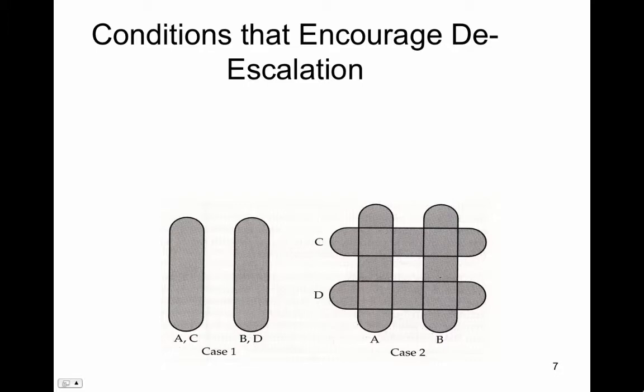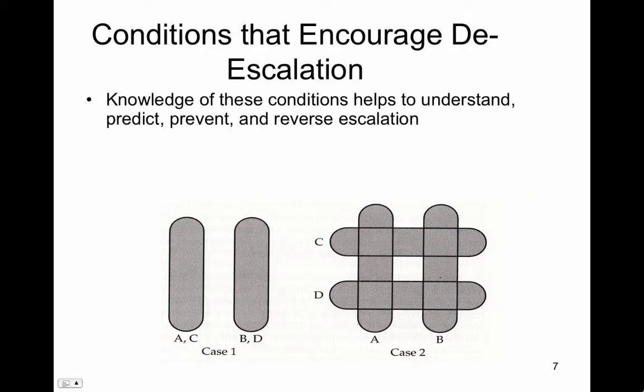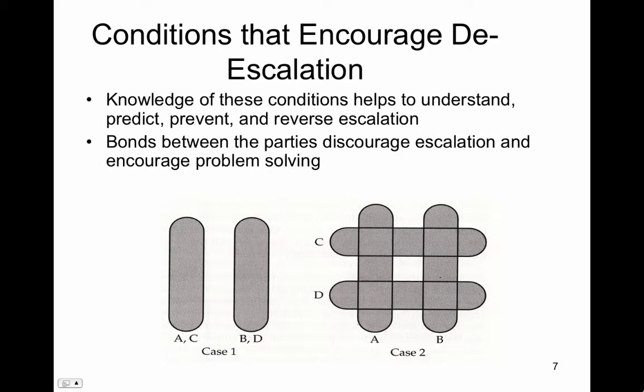What are the conditions that encourage de-escalation of conflict? Bonds. Bonds between parties discourage escalation and encourage problem solving. We have overlapping versus cross-cutting bonds. In order to resolve intractable conflicts, we need to promote cross-cutting bonds such as good neighborly relationships, inter-marriages, and inter-group friendships.